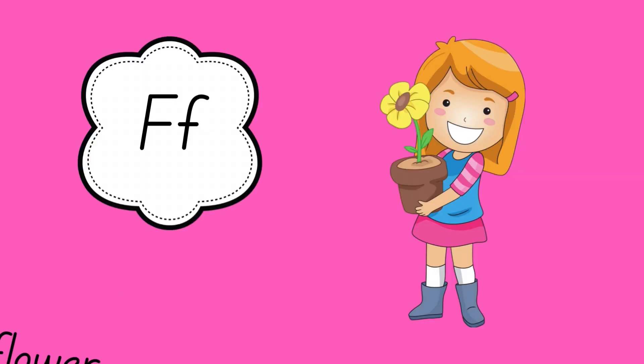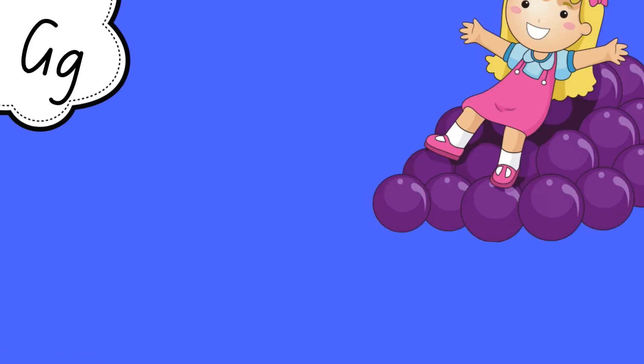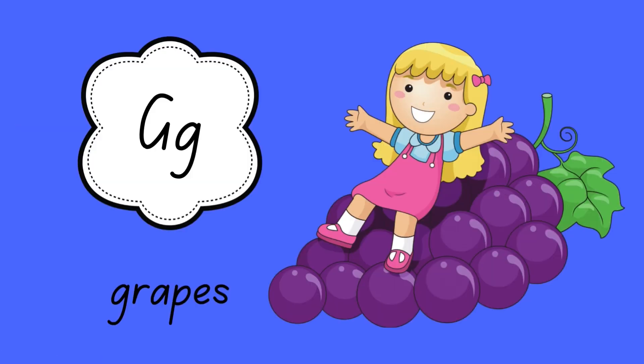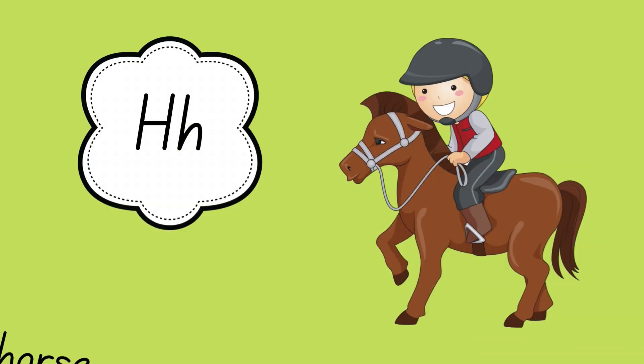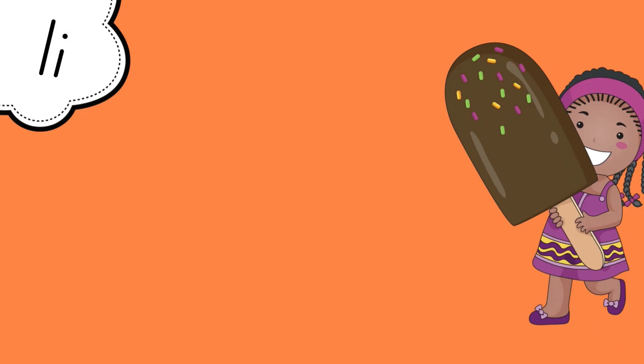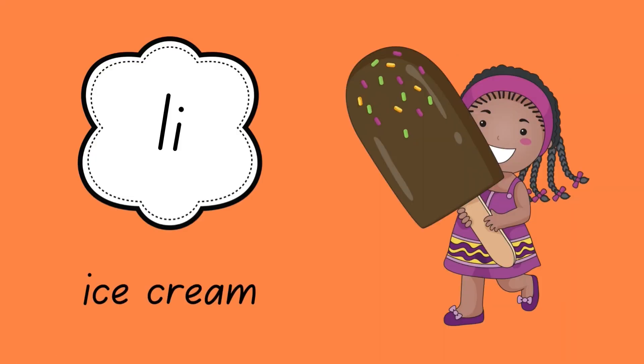F is for flower. G is for grapes. H is for horse. I is for ice cream.